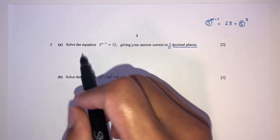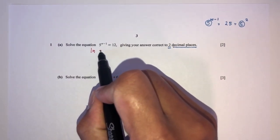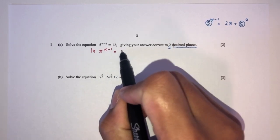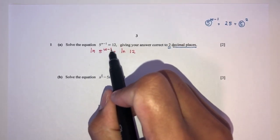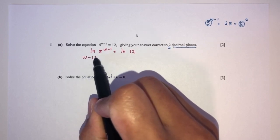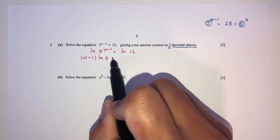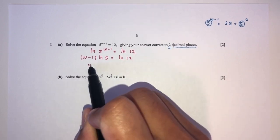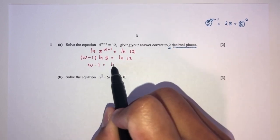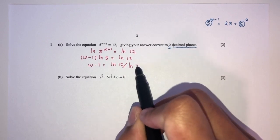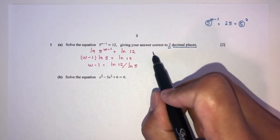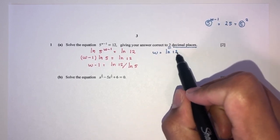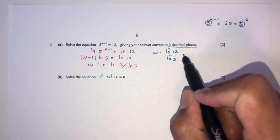We apply ln on both sides: ln of 5 to the power (w minus 1) equals ln of 12. By the laws of logarithms, we bring the exponent to the front: (w minus 1) times ln 5 equals ln 12. So w minus 1 equals ln 12 divided by ln 5. You can use ln or log — it's up to your preference, nothing restricts you. Finally, w equals ln 12 over ln 5 plus 1.